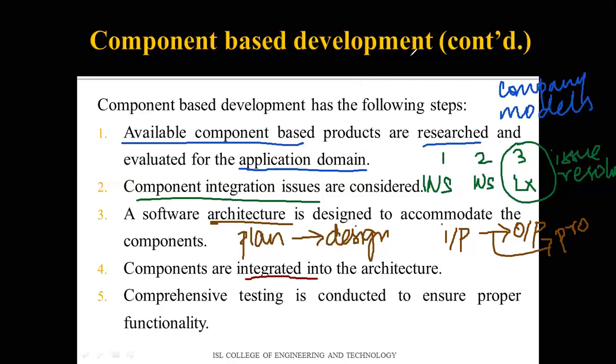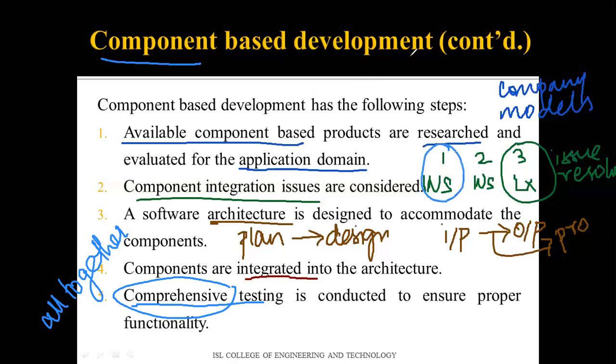The fifth step is comprehensive testing to ensure proper functionality. Each component is tested individually, but when integrated together into one software, you test all three components as a whole to check for errors or bugs. If any errors occur, changes are made and all five steps may be repeated to ensure correctness.